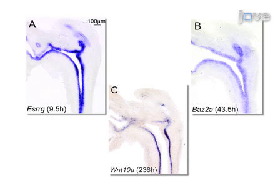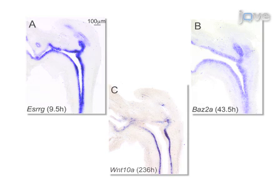Furthermore, there were no visible differences in background staining when samples were incubated in color development solution for prolonged time periods. Once mastered, this technique can be completed in 6 days if it is performed properly.